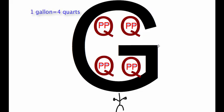Inside each Q, you'll find a P. Those Ps stand for pints. And you'll find two Ps. So what that means is that there's two pints in one quart.